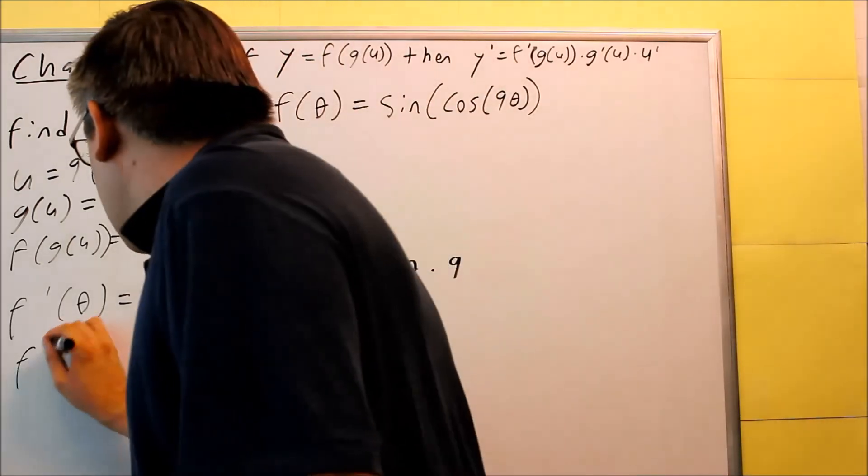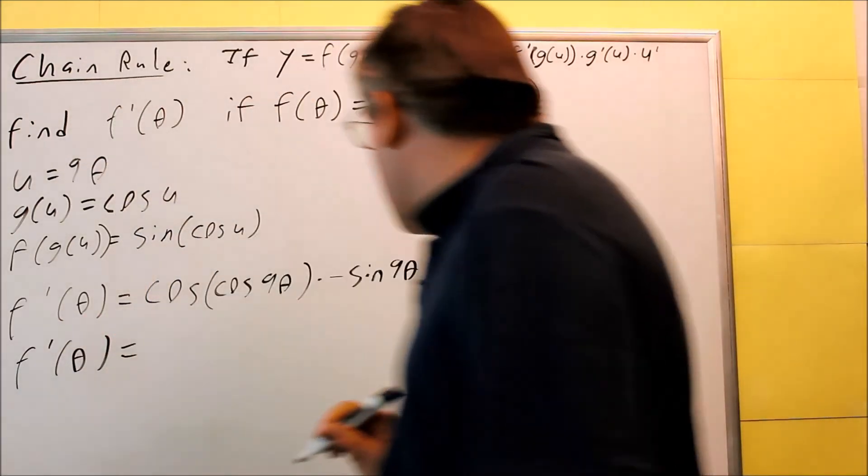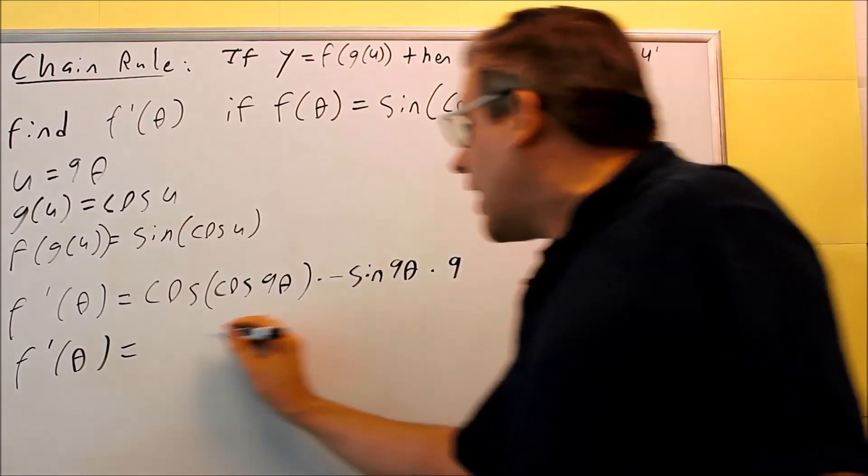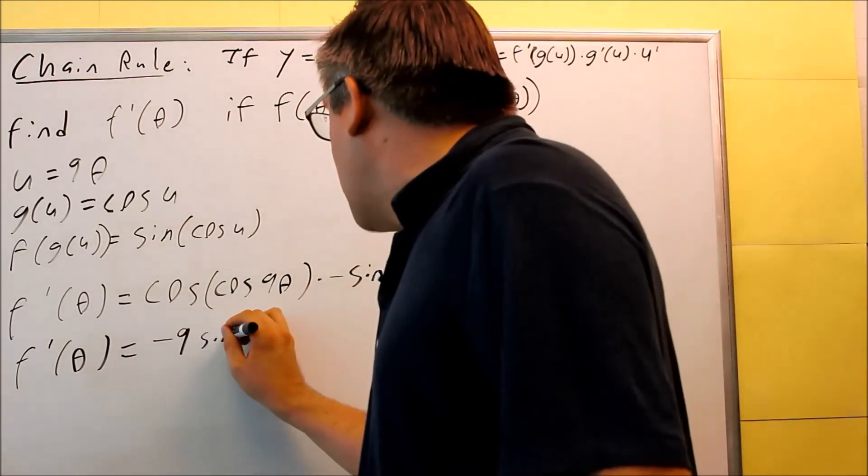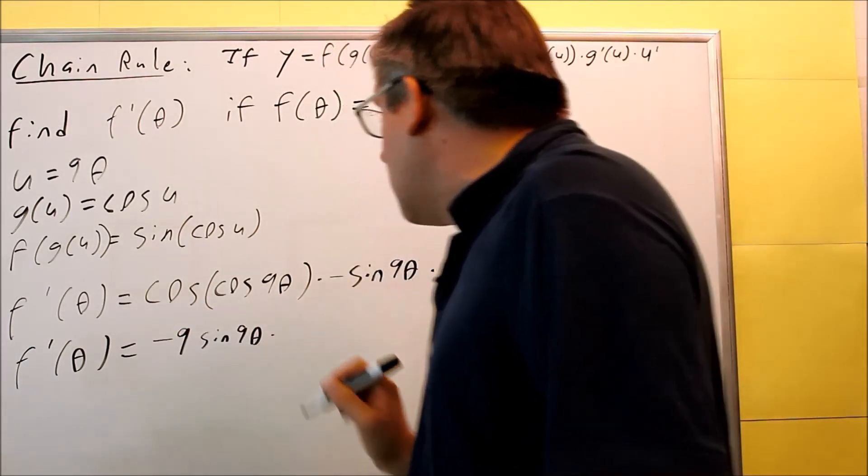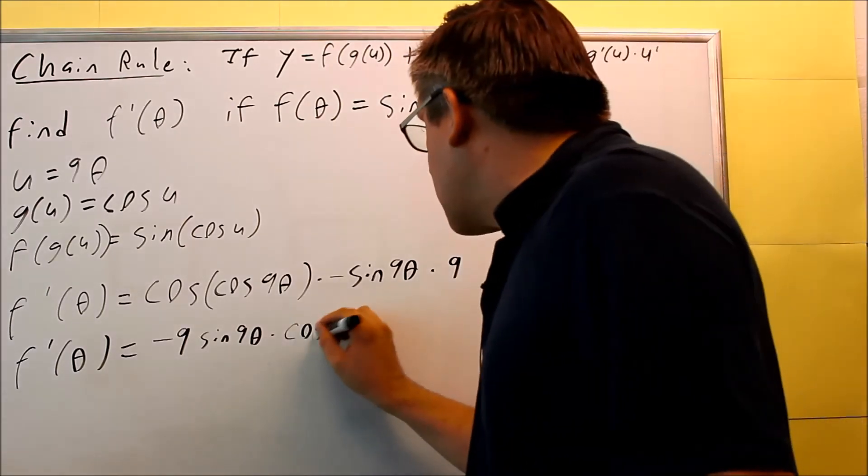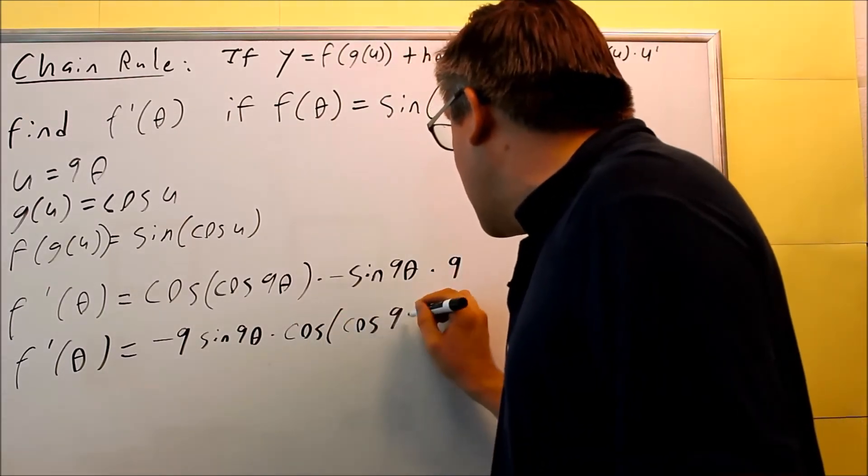Let's rearrange it, and that's about all we can do on this problem. So we'll put the negative 9 sine on the outside. It doesn't really matter the order in which you write these in. And then we have cosine times cosine of 9θ.